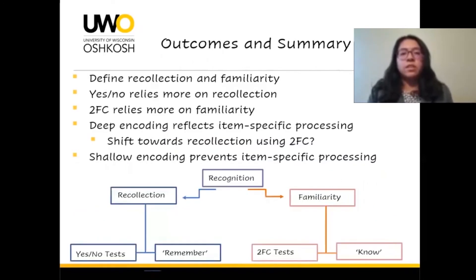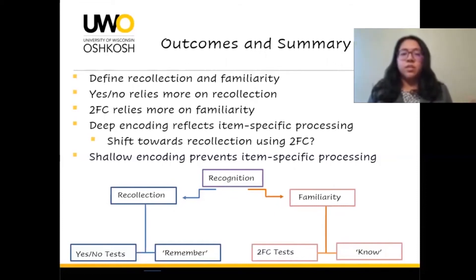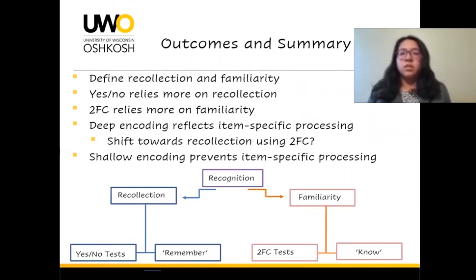Before diving into the outcomes, I wanted to define recollection and familiarity. Recollection and familiarity are two processes engaged in recognition memory. Recollection refers to the retrieval of specific information and is considered to be behind remember judgments because participants can vividly recall the experience. Yes-no tests are said to rely on this recollection process more, whereas familiarity is a general recognition of something without having specific details. Forced choice tests are said to rely on this familiarity process more.